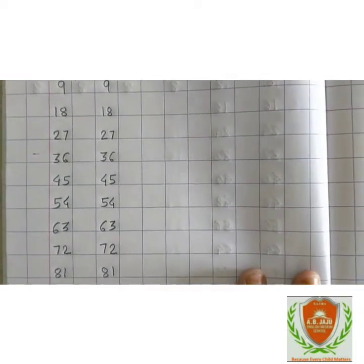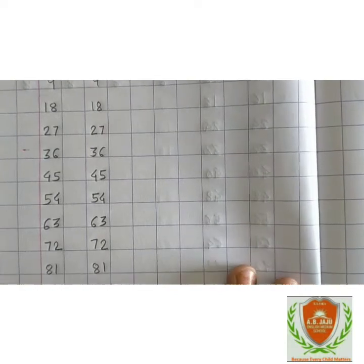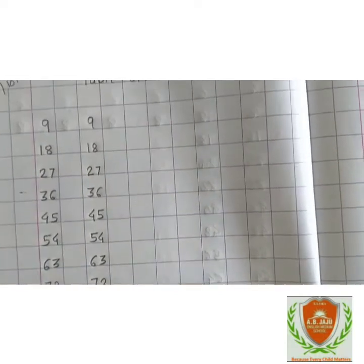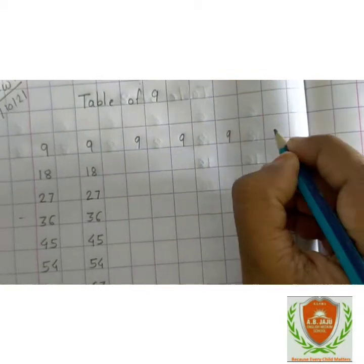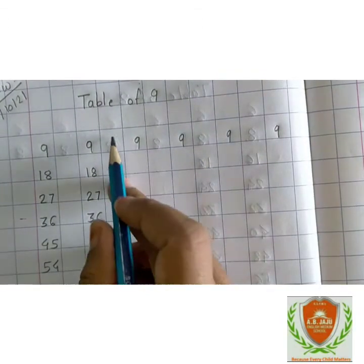So this is the table of 9 that we have written here. You also have to write it like this, but how many times? 6 times, one page.